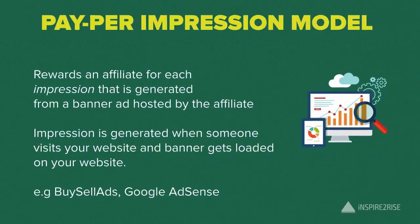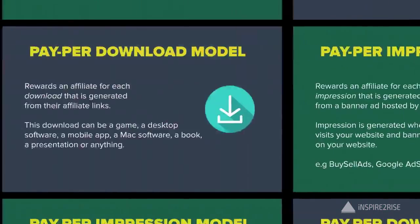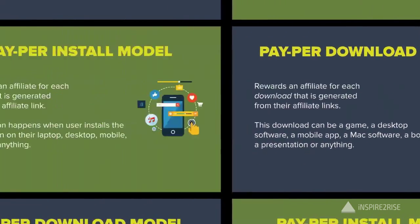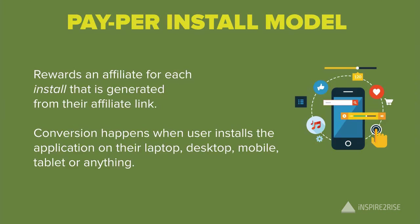The pay-per-impression model is like that seen in Buy Sell Ads or in some CPM ads on Google Ads, where you are rewarded by the number of impressions generated on the banner ad hosted by the affiliate. The pay-per-download model works on sites where, when you download something, you are redirected to an ad — rewards are generated for each download from the affiliate links, for example TinyURL. The pay-per-install model generates a reward for each install from the affiliate link, which normally happens when someone installs an application or software.